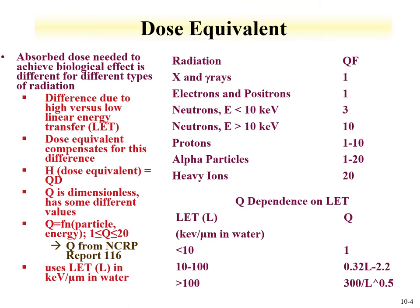Q can vary from 1 to 20. Information about what Q should be comes from the NCRP report — the National Council on Radiation Protection. The data defines Q as a function of the type of radiation. Photons — X and gamma rays — have a quality factor of 1, giving sieverts from grays and rems from rads. Electrons and positrons are 1. Neutrons are somewhat energy-dependent. For conservative measurements, we use 20 for alpha particles.